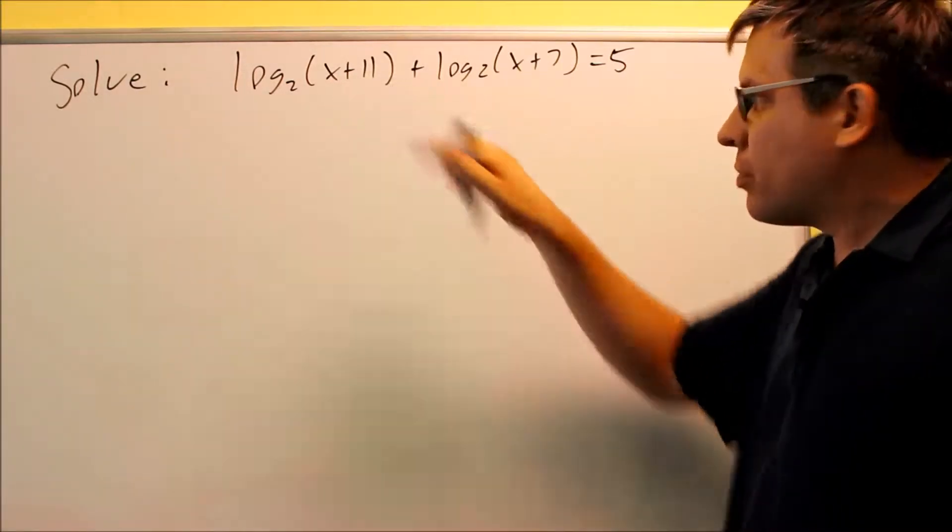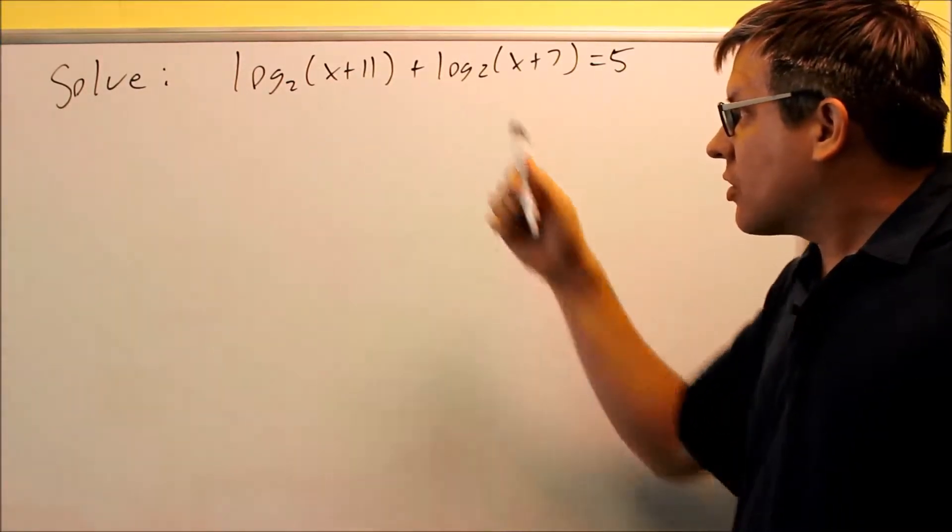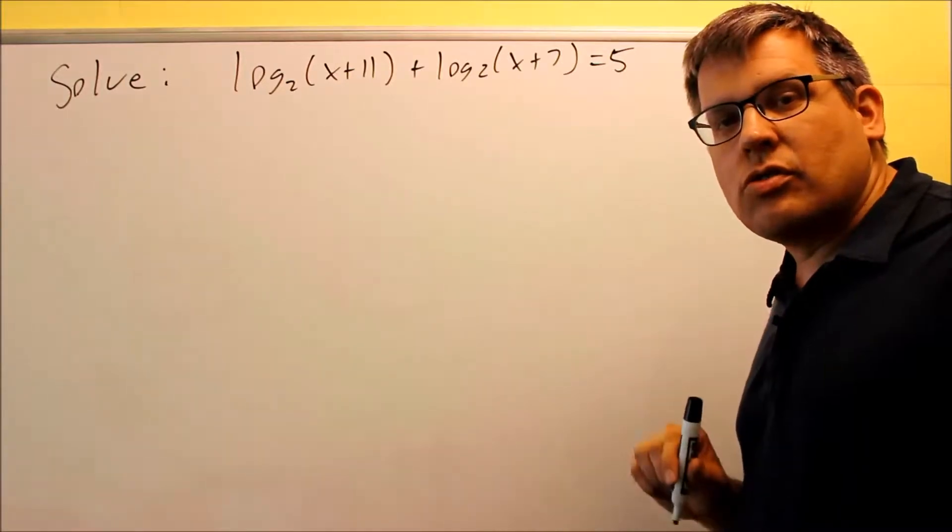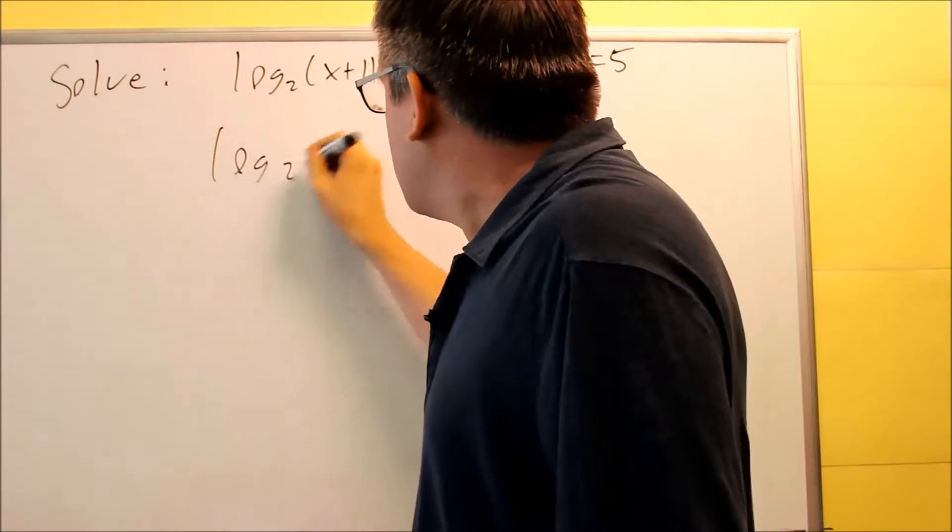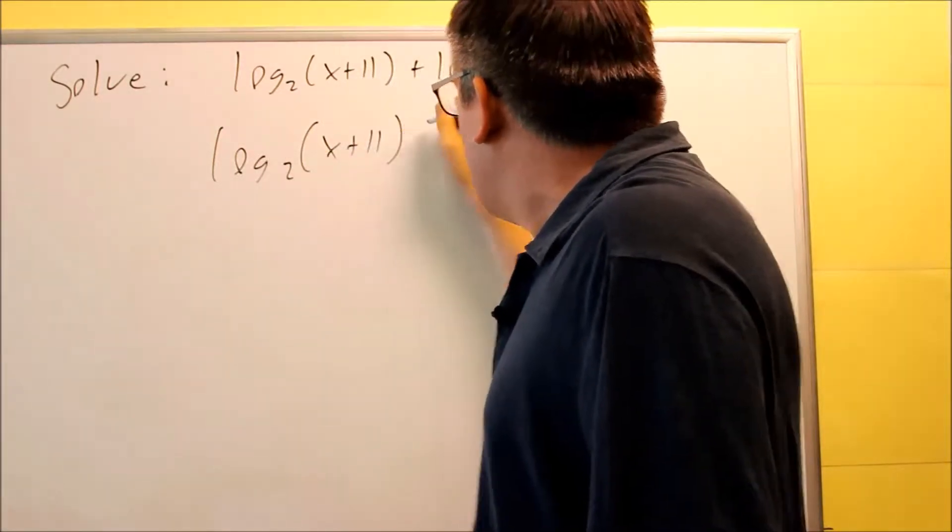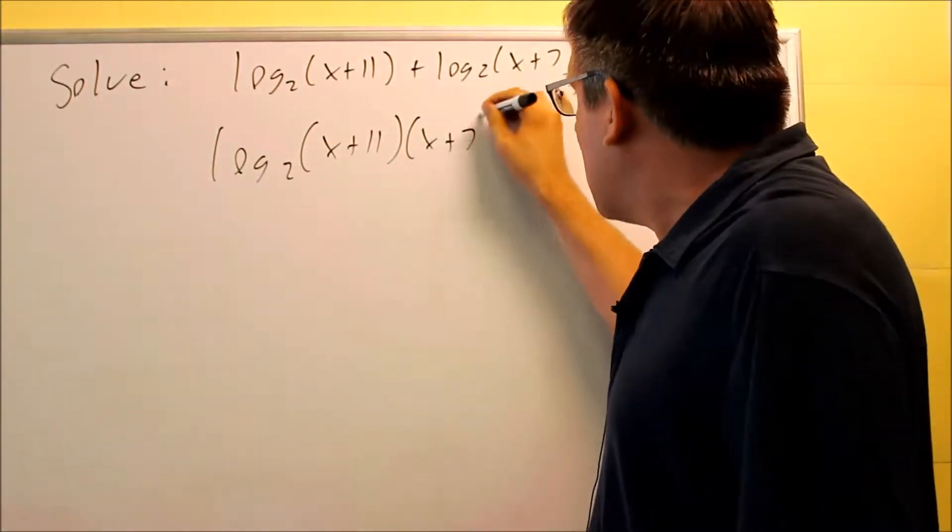We're ready now to combine this together into a single log. So if you have two logs with a plus sign in between, that means you're going to use rule six that turns into a multiplication. Both we're going to use the same base here, log two, we have x plus eleven, and then that's going to be times x plus seven.